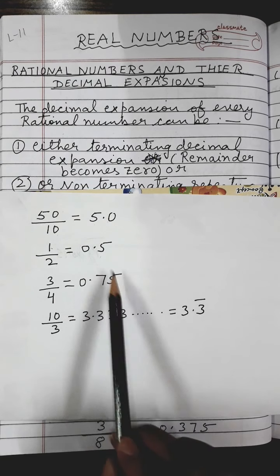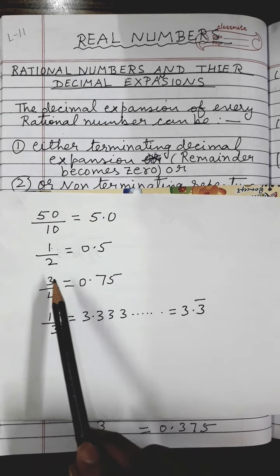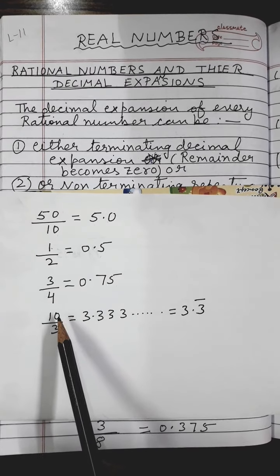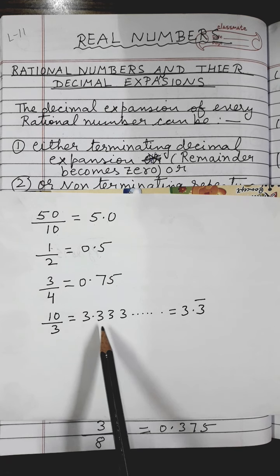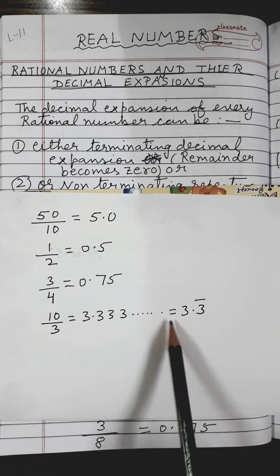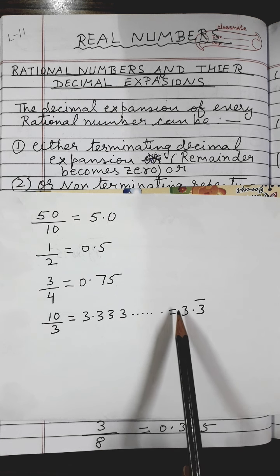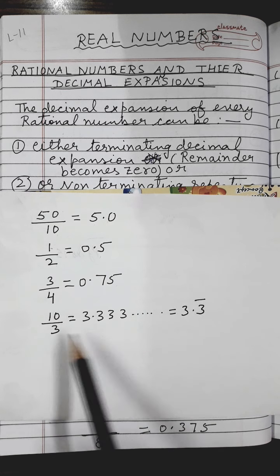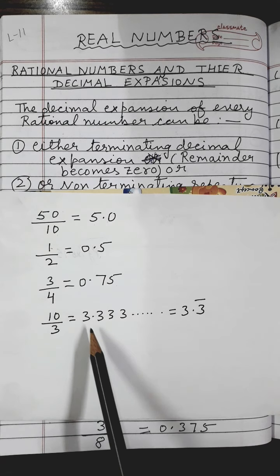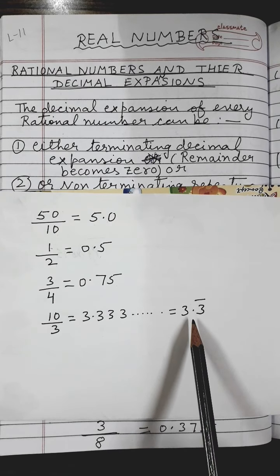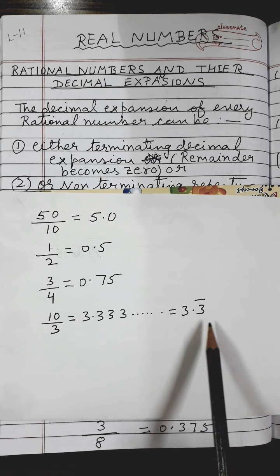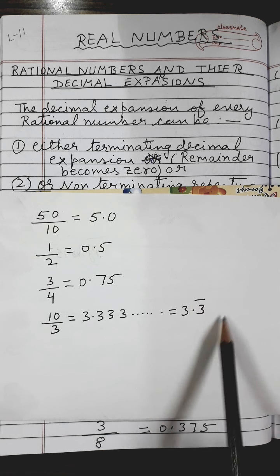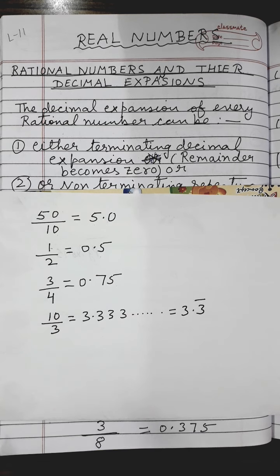Similarly, 0.75 is called the decimal expansion of rational number 3 upon 4. Now if I divide 10 upon 3, you will get the answer as 3.333... this 3 will keep on repeating, so we put dashes for it. So I can write it as 3.3 bar, meaning this digit 3 is going on repeating. So 3.3 bar is called the decimal expansion of rational number 10 upon 3.